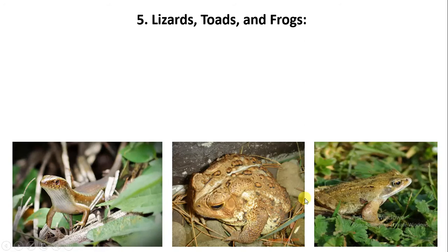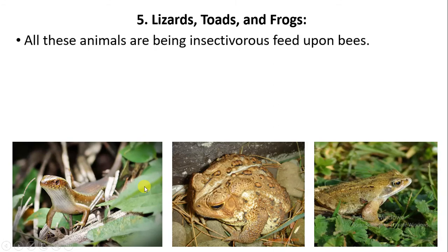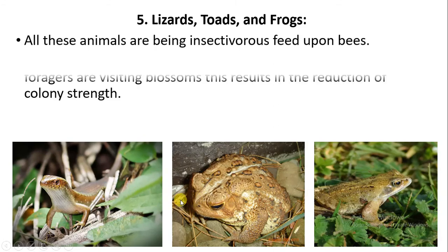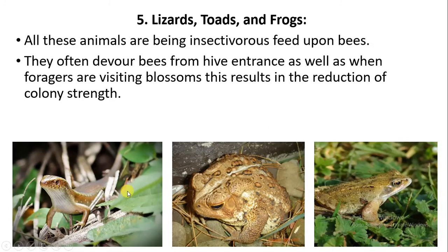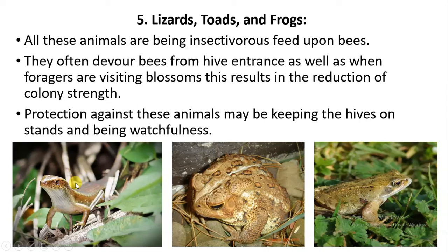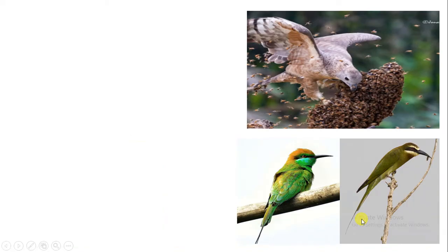The next types of enemies are lizards, toads, and frogs. These are insectivorous organisms that attack the honeybees. Whenever lizards, toads, and frogs approach the hive, they eat the honeybees very quickly. Therefore, the presence of these organisms near the beehive should be reduced, and a complete watch over the hive is compulsory.